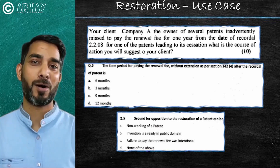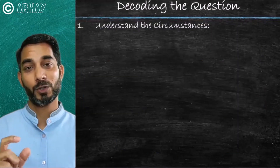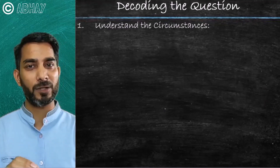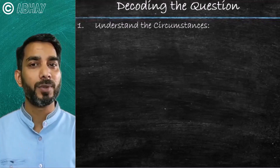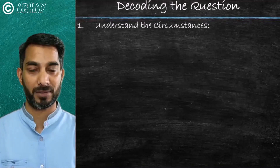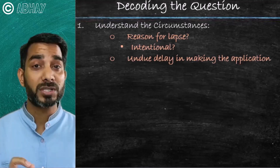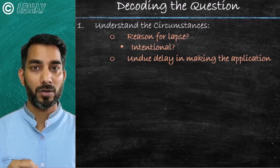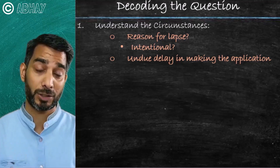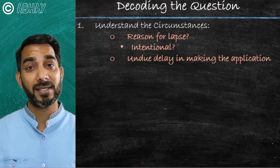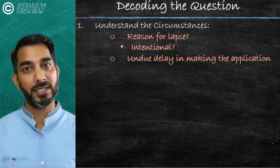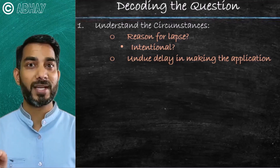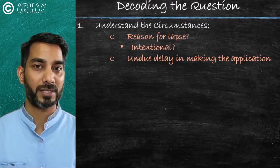So how do we go about decoding the question? We need to understand the circumstances whenever a question or scenario comes. It would be dealing with lapse of a patent — I missed paying the renewal fee, what happens? We need to understand: what was the reason for the lapse? Was it intentional? And now, when you are making this application for restoration, how much time has lapsed — have you delayed it for years, or have you come to the patent office as soon as you could? We gather this information from the question as we decode it.